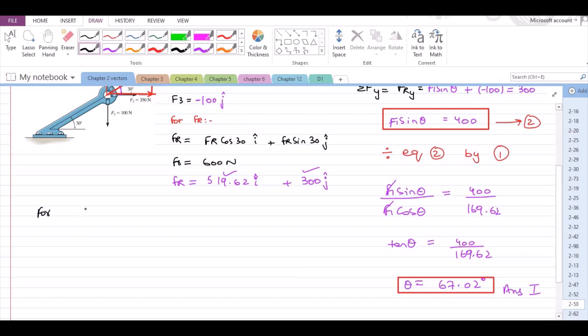For F1, let us put theta equals 67.02 degrees in either equation 1 or 2.